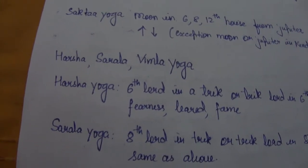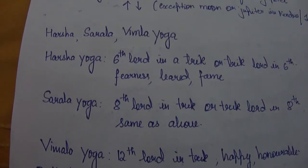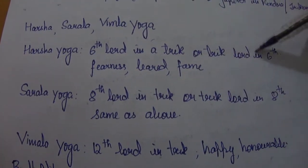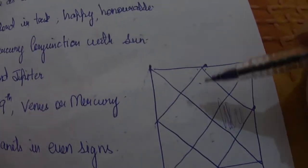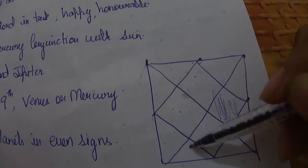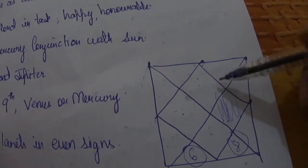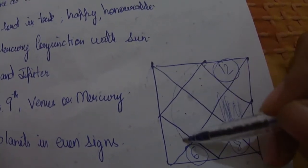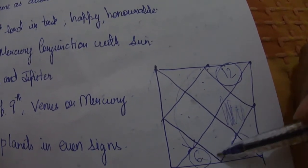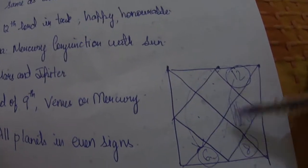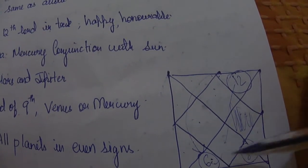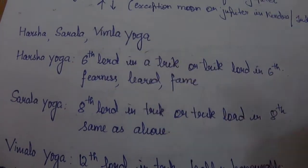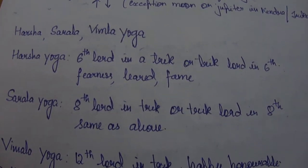There are three other yogas: Harsh Yoga, Saral Yoga, and Vimla Yoga. In Harsh Yoga, the 6th lord is in a trik house or a trik lord is present in the 6th house. The 6th, 8th, and 12th houses are considered trik or unfavorable houses. If the 12th lord comes into the 6th, or the 6th lord goes into the 12th or 8th, this gives rise to Harsh Yoga, making the person fearless, learned, and famous.